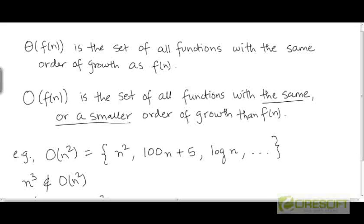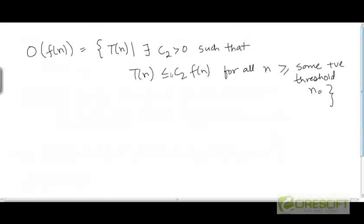So we can define O very formally in set-theoretic notation as the set of all functions T such that there exists a positive constant C2 such that T is bounded from above by a constant multiple of f, for all values of n larger than some positive threshold n0.